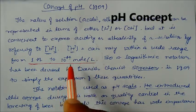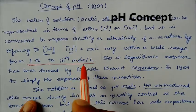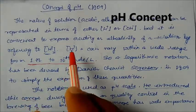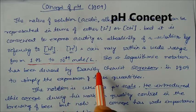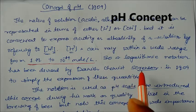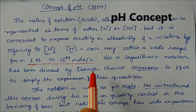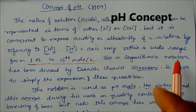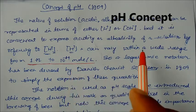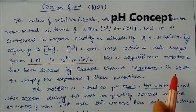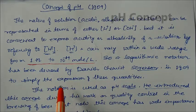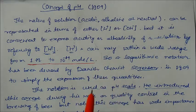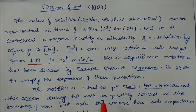So to understand this concentration, a logarithmic notation has been devised by Sorenson. He first devised this logarithmic notation to find the concentration of H+ in 1909.